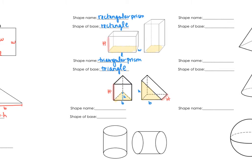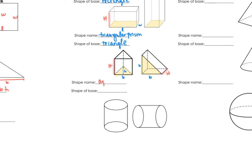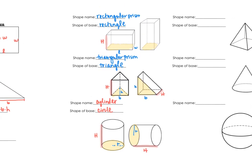The next shape is a cylinder, and the shape of the base is a circle. The dimension we look at with a circle is the radius, and then we have our third dimension — the height, capital H. One thing to notice about these three shapes is that they're all prisms, meaning the bottom and the top of the figure are the same shape.